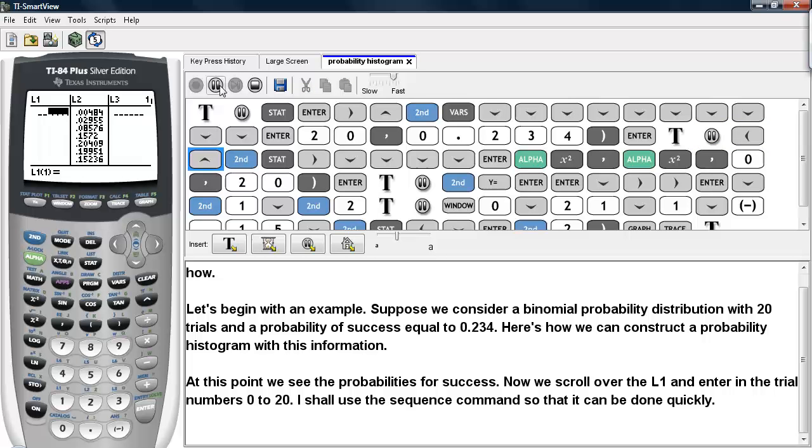So we go over to L1, highlight L1, and go under SECOND STAT. That's the list option. Go under OPS and choose the SEQ command, SEQUENCE command.